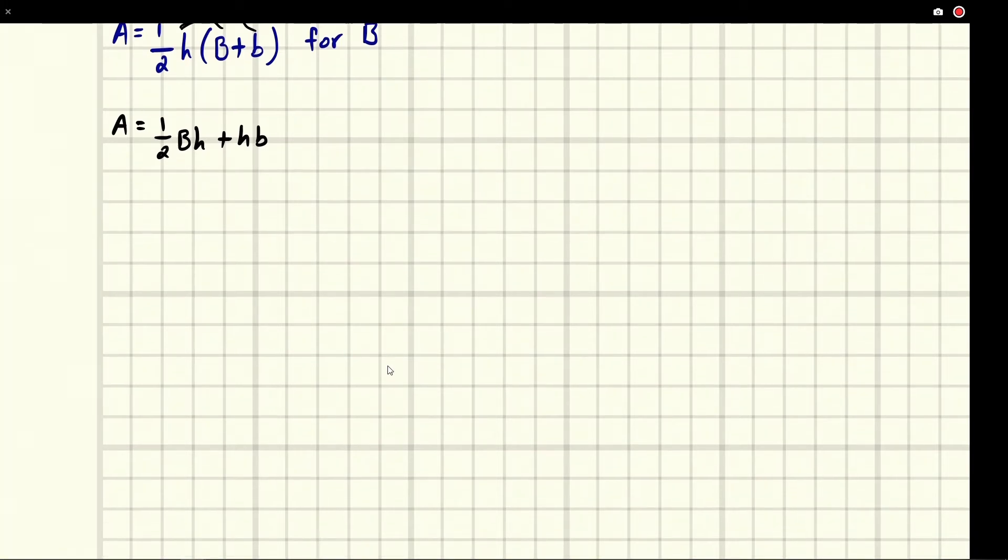Now we've separated it out and we can solve it as if everything else was a number except this B. The first thing we would do is remove this extra bit over here. This is the easiest to get rid of because we can just do the opposite of it.